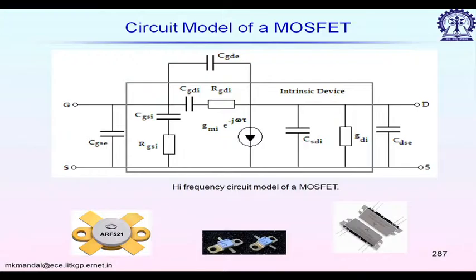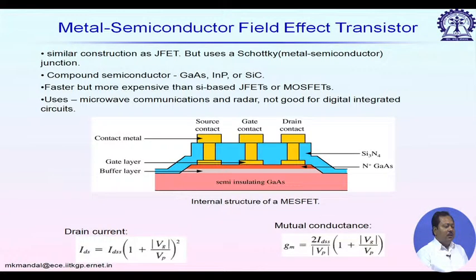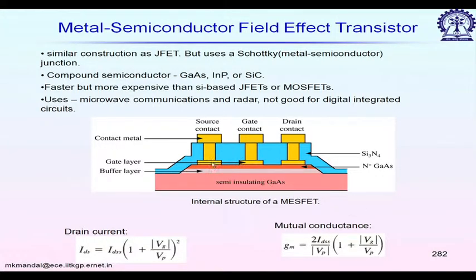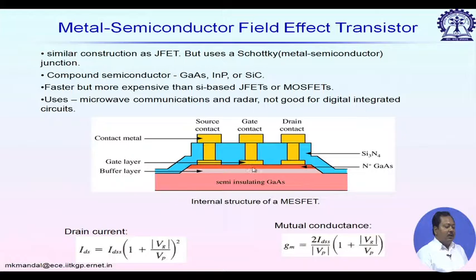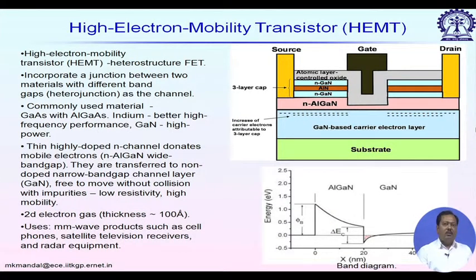To improve high-frequency performance, one approach is to decrease gate capacitance. A MESFET (Metal-Semiconductor FET) uses a Schottky junction — simply metal-semiconductor — instead of an oxide layer. In this structure, just below the gate is an n+ gallium arsenide layer with no oxide, giving lower capacitance and higher f_T, though it has other drawbacks. The next step is a modified version called the High Electron Mobility Transistor.